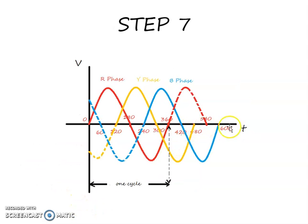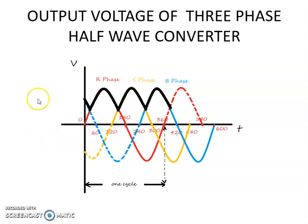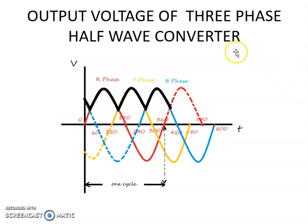To draw the output waveform of this three-phase half-wave converter you have to trace the envelope of the three-phase waveform. The black line shows the output waveform of the three-phase converter. We have three pulses present, as we are just tracing the envelope of the three-phase waveforms. This is the output of a three-phase half-wave converter.